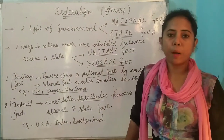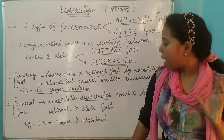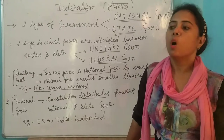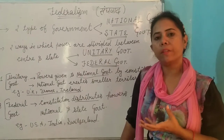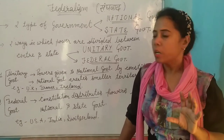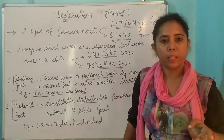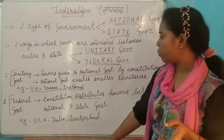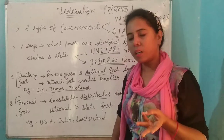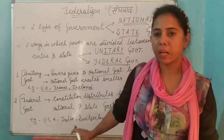Hamare India mein example lete hain: jo hamara constitution hai, usme powers ko divide kiya gaya hai. Center level par alag se government hai, aur jo hamaari states hain, wahan par different-different states ki different governments hain aur unki alag-alag powers hain, jo ki unhe hamare constitution ke dwara di gayi hain. There are three lists for power distribution: first is center list, second is state list, and third is concurrent list. Iske baare mein hum kal padhenge.